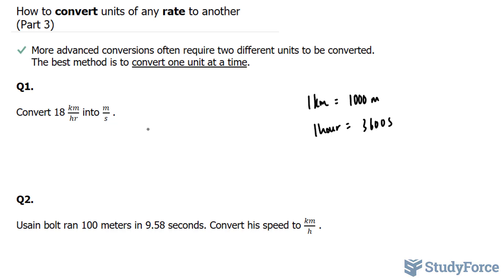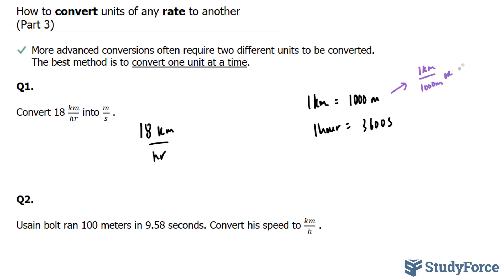Keeping that in mind, let's write down what we have: 18 kilometers per hour. What we're going to do first is convert kilometers first. You can convert hours to seconds first, but I've chosen kilometers. We are going to use the first conversion ratio, which can be written as 1 kilometer over 1,000 meters, or 1,000 meters over 1 kilometer.